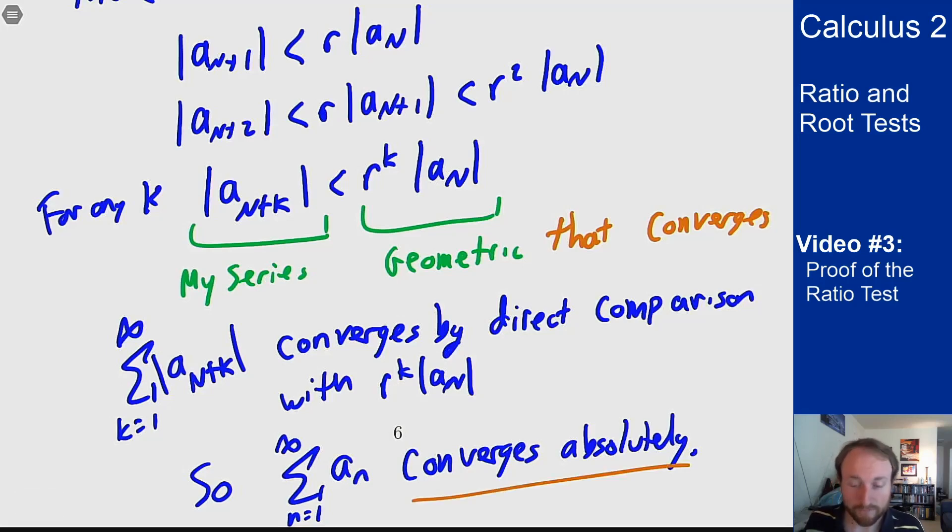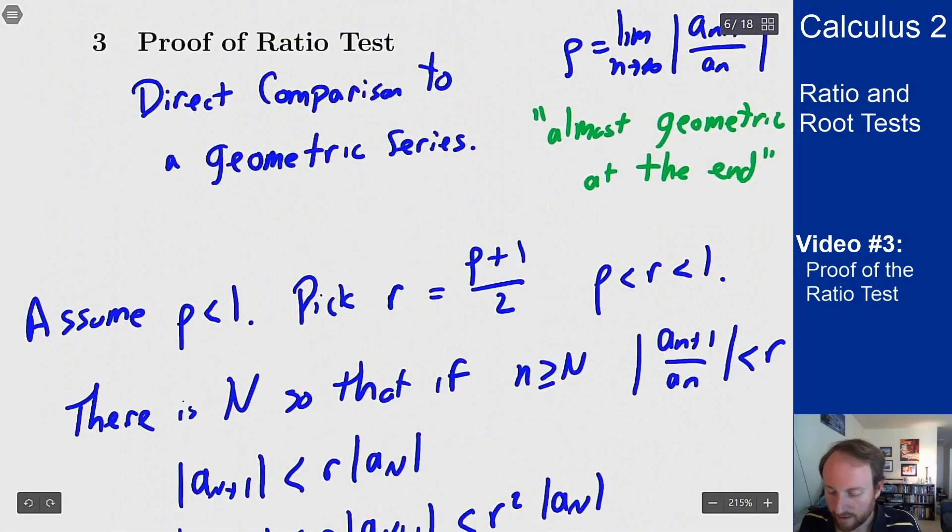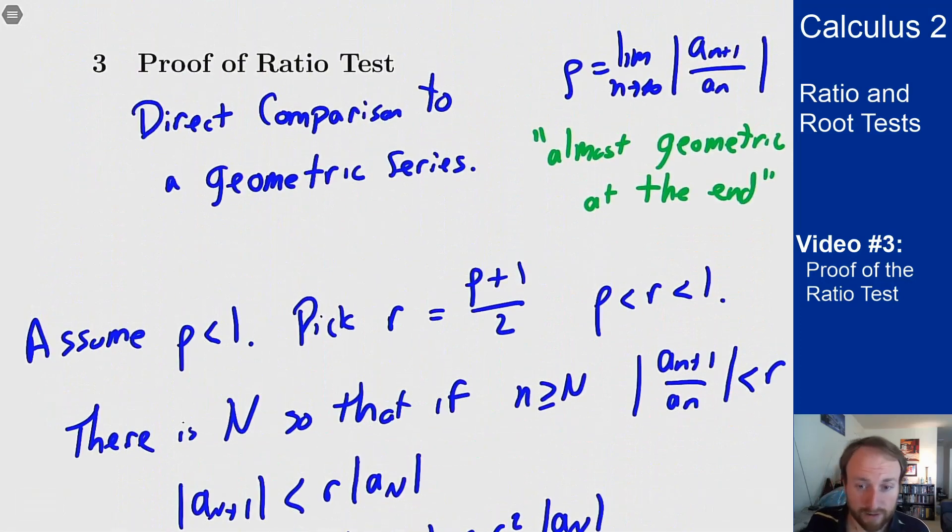How would you do this the other way? Well in the other case if ρ is bigger than one, I'm not going to go through the whole details here, but if ρ is bigger than one, I pick this same r and now r is bigger than one and less than ρ.